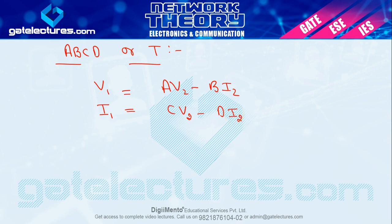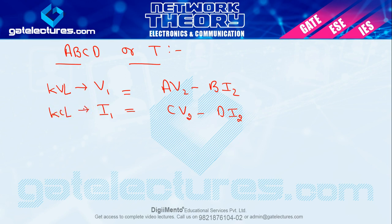अगर आपको last video remember होगी, तो मैंने बताया था कि अगर आप V1, I1, V2, I2 में से two terms left hand side use कर लेते हैं, जैसे V1 और I1, तो जो remaining रहेंगे - V2 और I2 - वो दोनों equations में आएंगे। पहला equation आपका KVL equation है और दूसरा KCL equation। ABCD parameter में एक new चीज यह है कि यहाँ plus की जगह minus sign होता है।